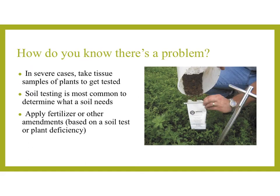So how do you know if there's a problem? In severe cases you could take tissue samples of the plant and get them tested. Soil testing is the most common method to determine what the soil needs, and from there you could apply fertilizer or make other amendments based on the soil test or the plant deficiency results. This might not be something someone does for a small home garden, but if you were growing on a large scale it would obviously become a major issue.